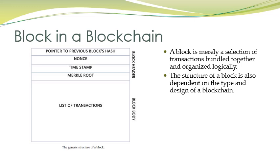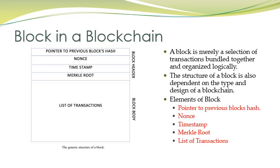The block structure may vary depending on the design of the blockchain, but the basic elements are the same: hash of the previous block, timestamp, Merkle root, and transactions. There may be additional elements depending on the design. The timestamp gives information about when the transaction was initiated and committed, providing a history of transactions in the block.